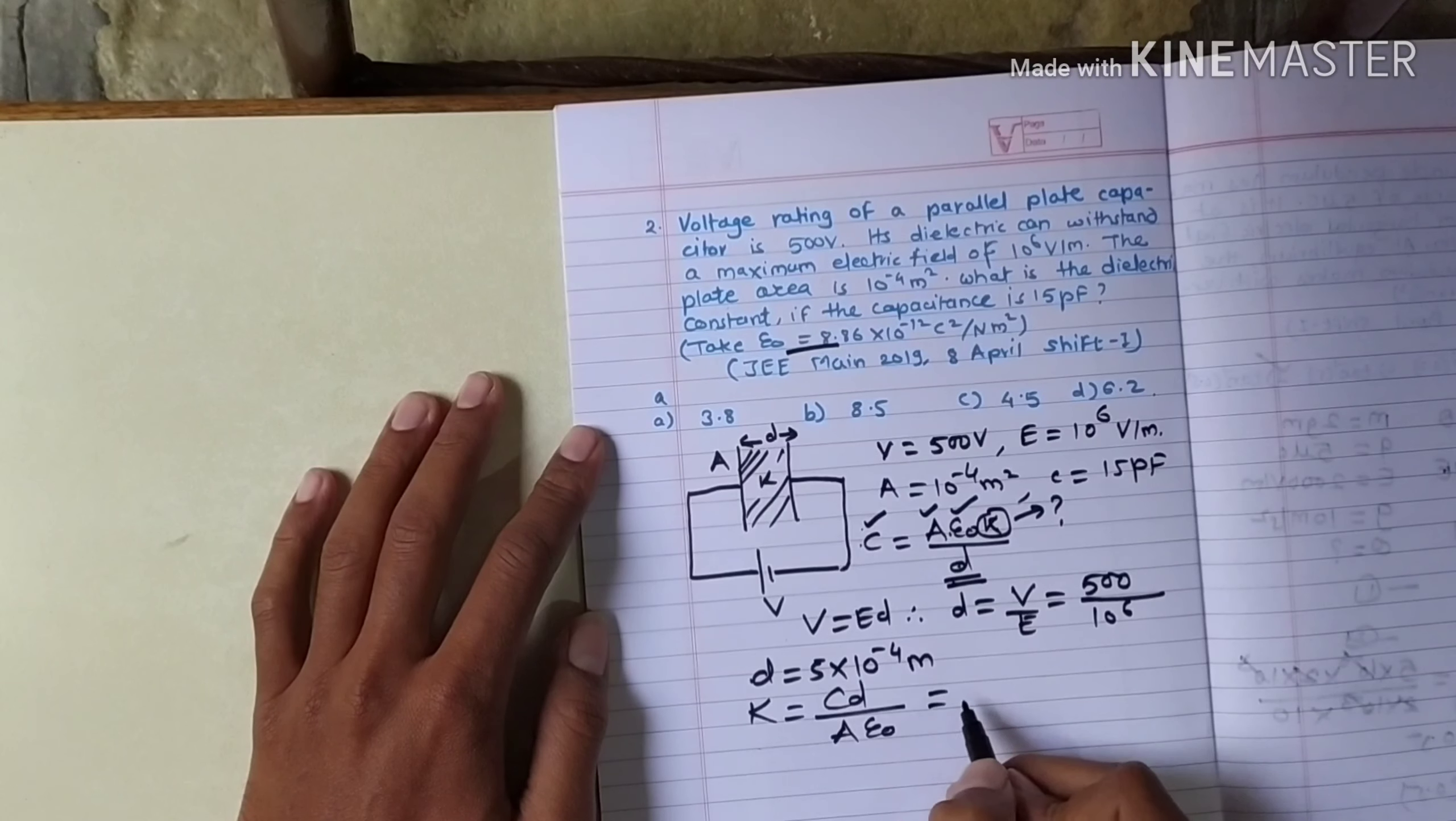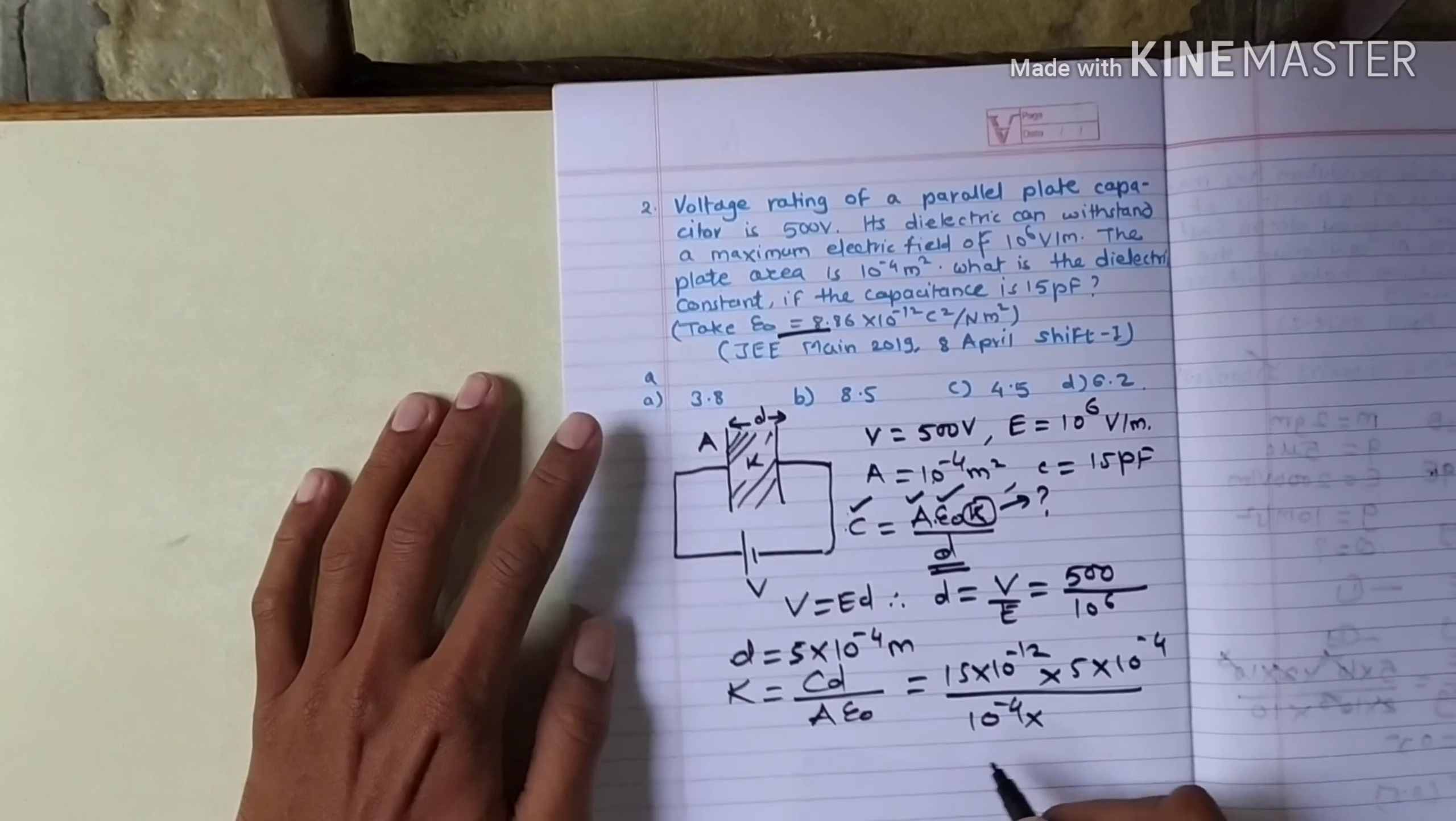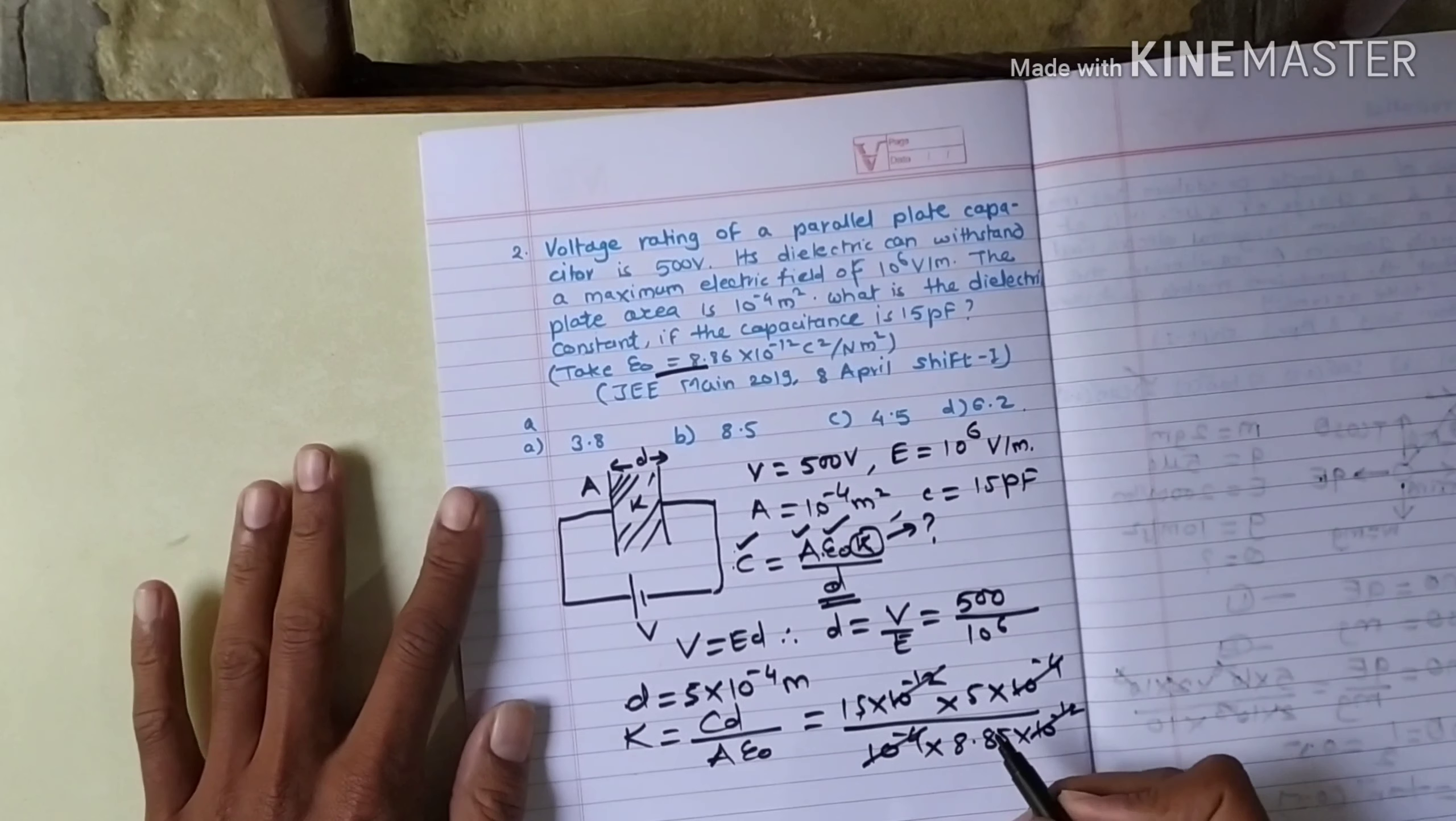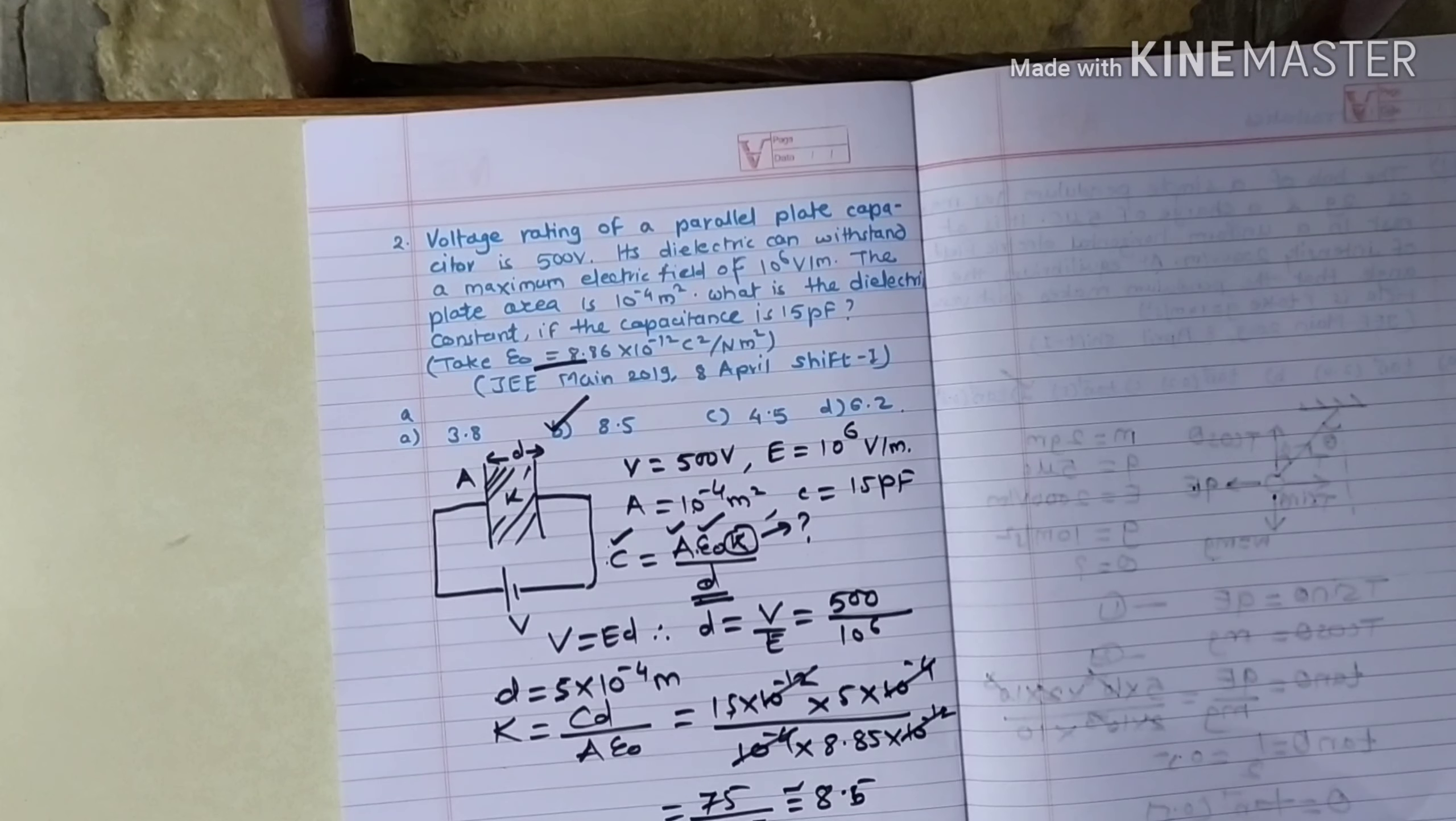What is capacity? It is 15 picofarads, so 15 into 10 raised to minus 12. Distance is 5 into 10 raised to minus 4. Area of the plates is 10 raised to minus 4. Permittivity of vacuum is 8.85 into 10 raised to minus 12. 10 raised to minus 12 will get cancelled. 10 raised to minus 4 will get cancelled. 15 into 5 is 75, 75 divided by 8.85. Approximately, it comes out to be 8.5. So out of the given options, the second one is correct.